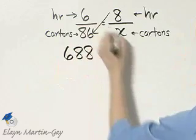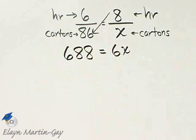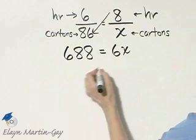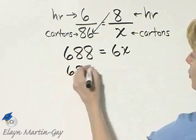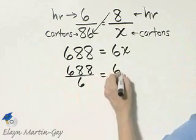Equal to 6 times x or 6x. How do we solve this equation? We'll solve by dividing both sides by the coefficient of x, which is 6.